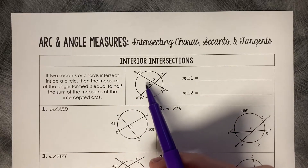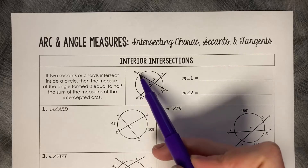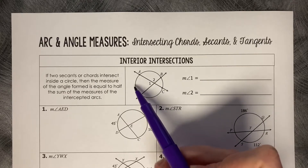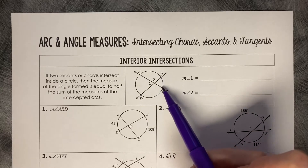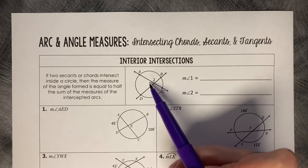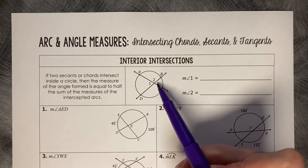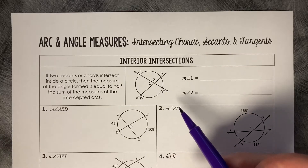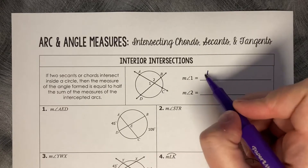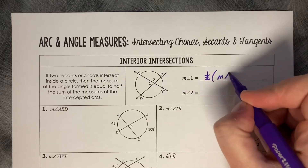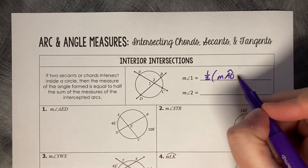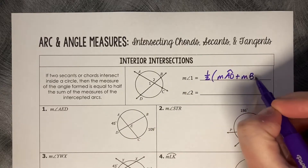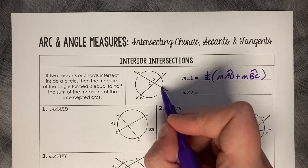So for example, angle number 1 — if we wanted to calculate that, its intercepted arcs are what I call the corresponding arcs. So arc AD is a corresponding arc on the left, and arc BC is a corresponding arc on the right. The measure of angle 1 is one half the measure of arc AD plus the measure of arc BC.